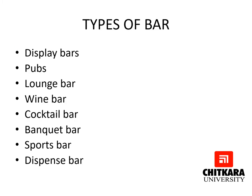Bars are classified into two basic categories: display bars and dispense bars. Display bars are usually sub-categorized into pubs, lounge bars, wine bars, cocktail bars, banquet bars, and a new concept from the United States — sports bars. Dispense bars are at the back of the department to dispense drinks ordered from room service or a restaurant like the coffee shop, or they can serve as a base bar where raw materials, equipment and ingredients are stored and all the mise en place is done.